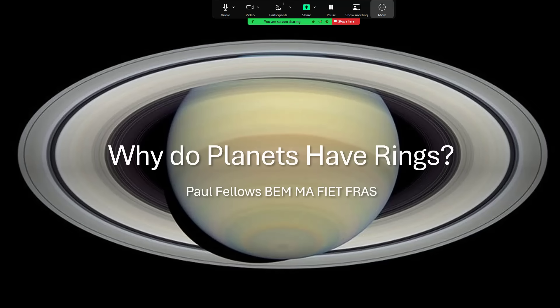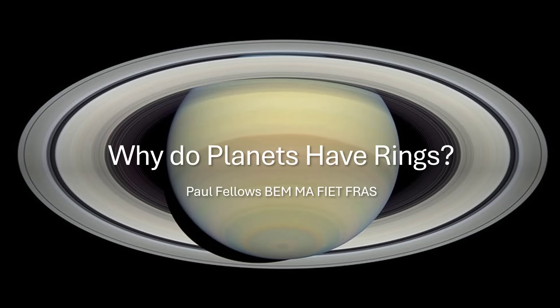Why do planets have rings? Let's start with this amazing image of Saturn — the planet in the center with its lovely pastel shaded clouds and belts around it, and outside of that the amazing ring system. It's very complicated: you can see main rings, gaps between them, and lots of individual ringlets building up to make the entire ring system.